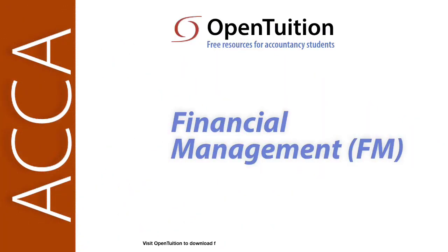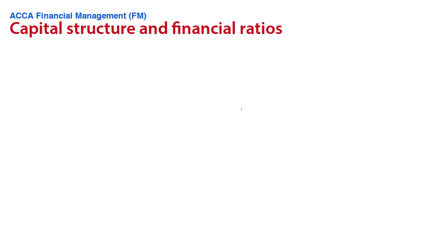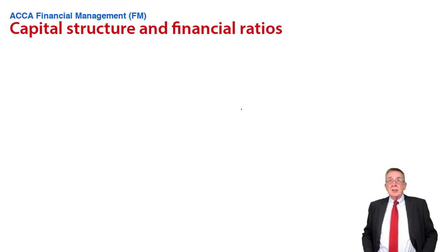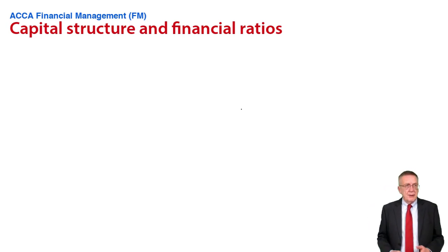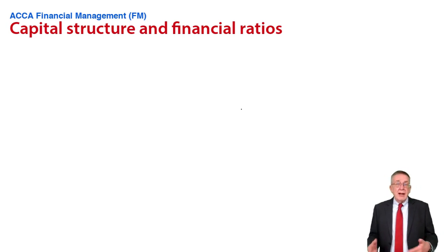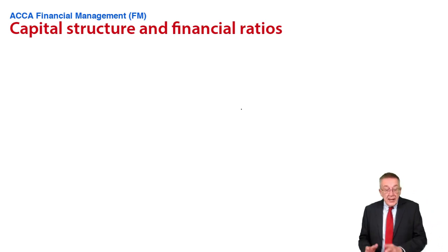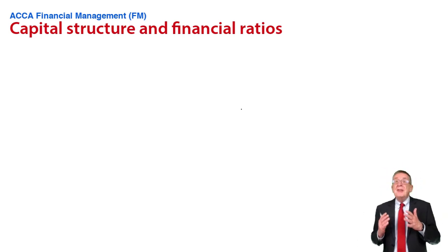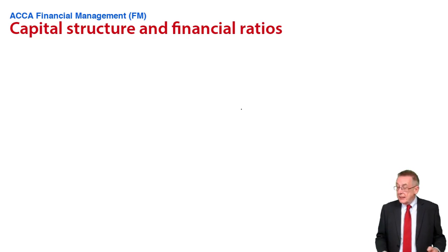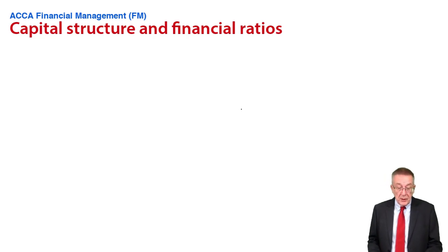This is a lecture from Open Tuition. To benefit from the lecture, you should download the free lecture notes from opentuition.com. This is the third and final lecture on chapter 13, which is other financial ratios. I say 'other' because we have already looked at some — back in chapter 3, we looked at various working capital ratios. These ratios are specifically relating to lenders, equity and debt — financial ratios, the sorts of ratios that appear in the financial press.